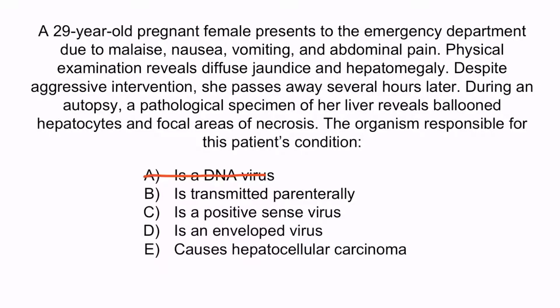Parenteral transmission refers to IV drug users, and this is more commonly associated with Hepatitis B, C, and D viruses — so B is incorrect. D is wrong because Hepatitis E virus is a naked virus, not an enveloped virus. E is wrong because Hepatitis B and C viruses are associated with hepatocellular carcinoma, but Hepatitis E virus is not. So again, the correct answer is C — the organism is a positive sense virus.